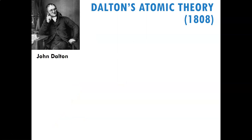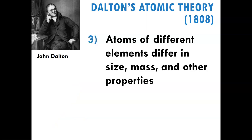The third part: atoms of different elements differ in size, mass, and other properties. He thought carbon was different than hydrogen, hydrogen was different than iron, iron is different than carbon. And we know that's true — that's why they have different names. They have different masses, they have different properties. They are different.